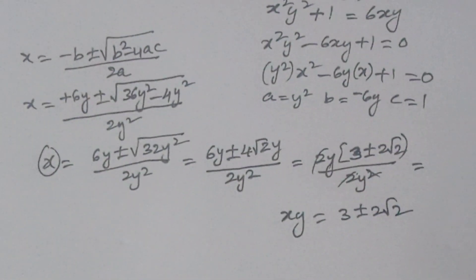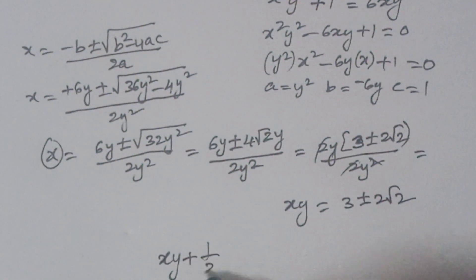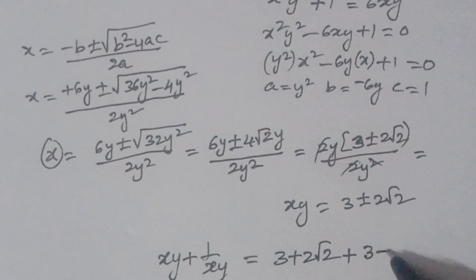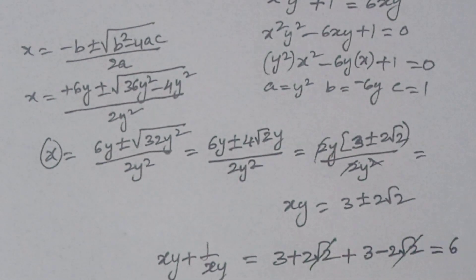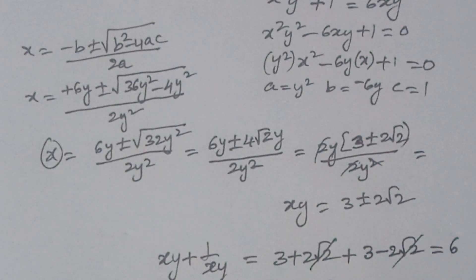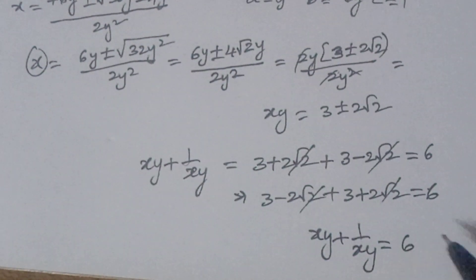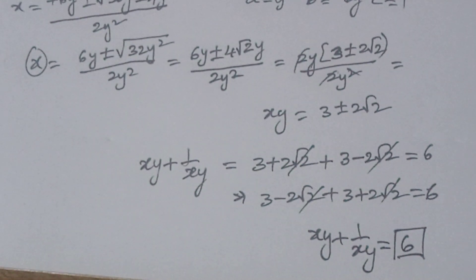So xy = 3 + 2√2 or 3 - 2√2. Note these are reciprocals of each other. In either case, xy + 1/(xy) = (3 + 2√2) + (3 - 2√2) = 6. Therefore xy + 1/(xy) = 6. I hope you liked the video — please subscribe and share with your friends. Thank you for watching Ion CG Max Olympiad, bye!